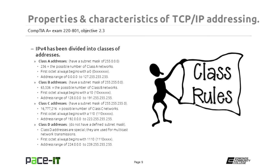Then there are Class B addresses. They always have a subnet mask of 255.255.0.0, which gives us 65,536 possible Class B networks, because that's 2 to the 16th power. The first octet of a Class B address always begins with one-zero, and the other six bits can be zeros or ones. For Class A, the first digit is always a zero and the other seven digits can be anything.